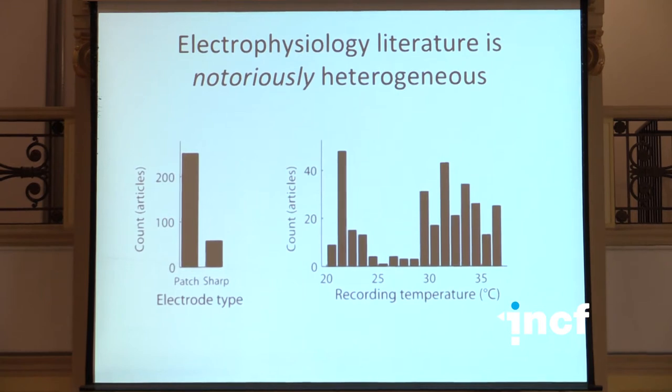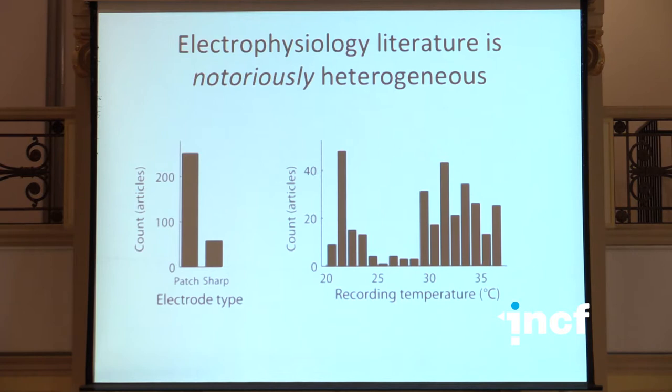But there's a massive problem. The literature is notoriously heterogeneous. We know that the kind of electrode you use to record simple electrophysiological parameters like resting potential and input resistance is going to change the results. If you record from neurons in a slice, you could choose to heat your slice or not, and that change is going to affect the data you collect. There really aren't any conventions for doing it one way or the other.